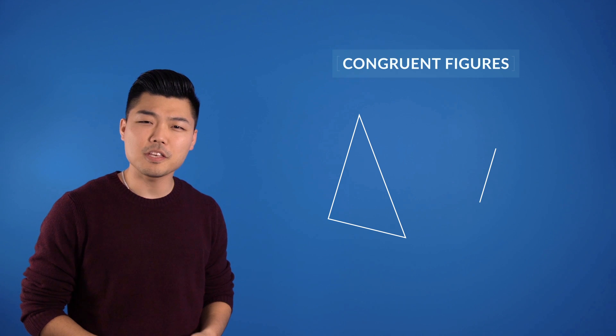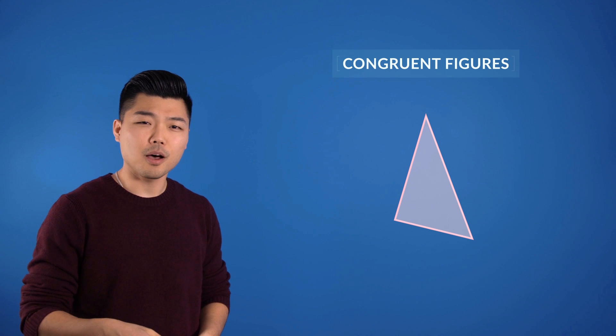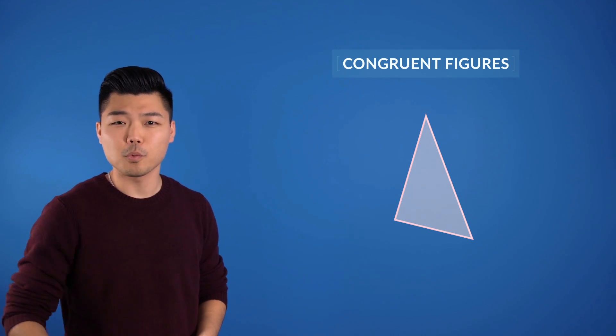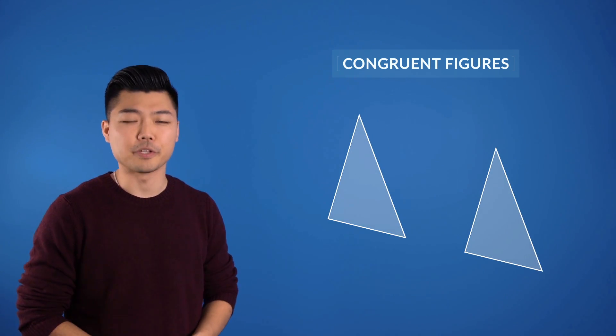Take a look at these two triangles. If we stack them on top of each other, the one on top would pretty much hide the one on the bottom. This is one way to know that these triangles are congruent.